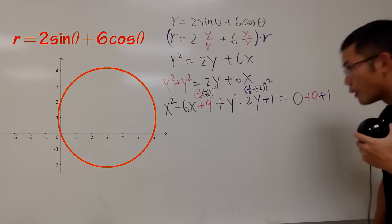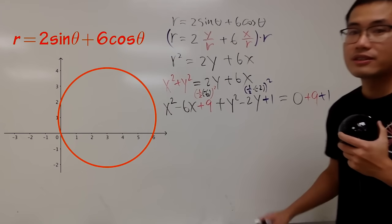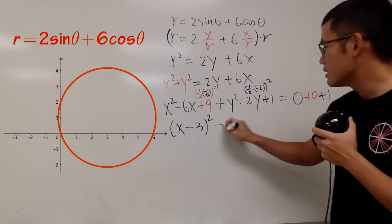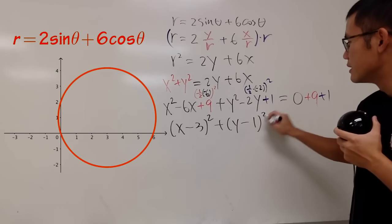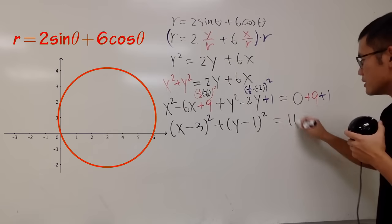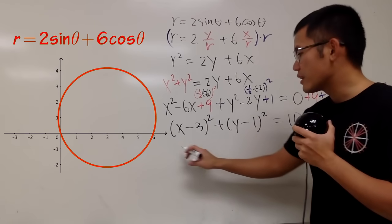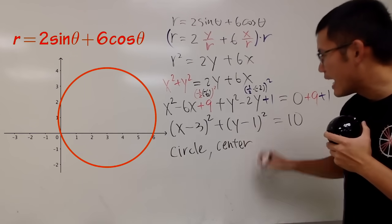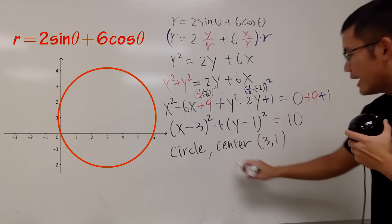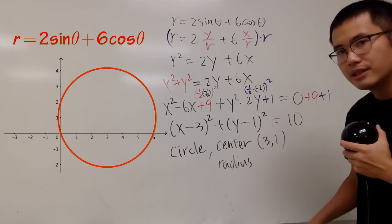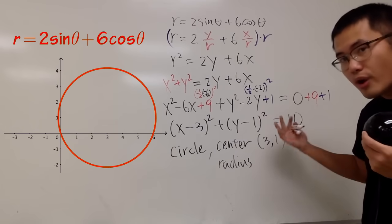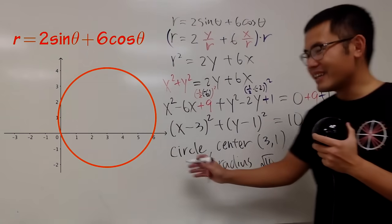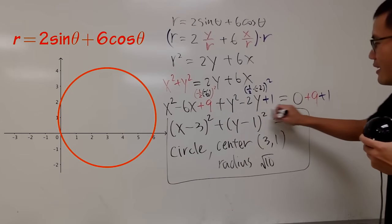Adding positive 1 on both sides — the magic number works out magically. This right here is X minus 3 squared, and this right here is Y minus 1 squared, and this equals 10. As you can see, this is in fact an equation of a circle, with center at (3, 1), and the radius is the square root of 10, which is approximately 3 point something. This is how you work with polar equations.